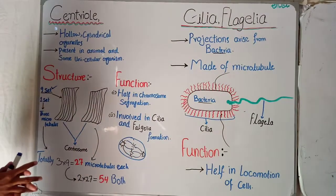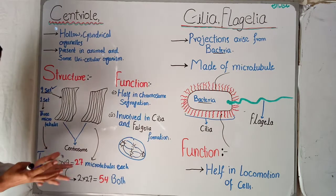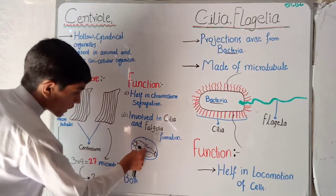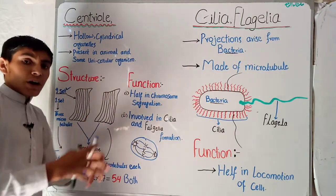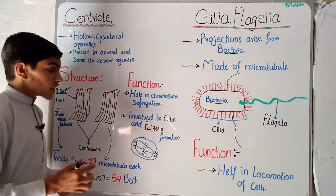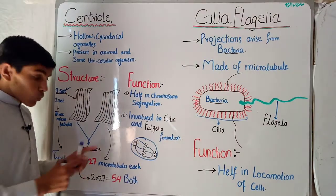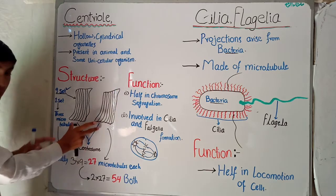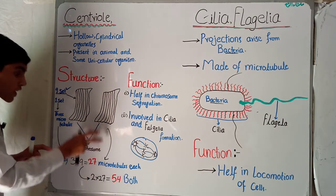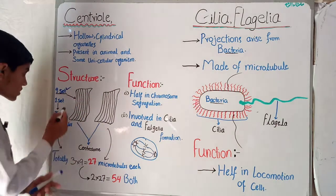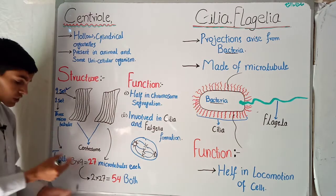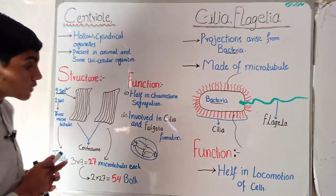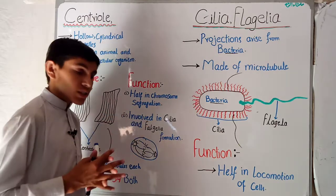Let us revise: Centrioles are hollow cylindrical organelles present inside the cell but not inside plant cells, because in plant cells chromosome segregation is done by Golgi body vesicles. Each centriole consists of nine sets of microtubules, each set consisting of three microtubules — giving 27 per centriole. Both centrioles together form the centrosome with 54 microtubules. Their functions are chromosome segregation during cell division and formation of cilia and flagella.